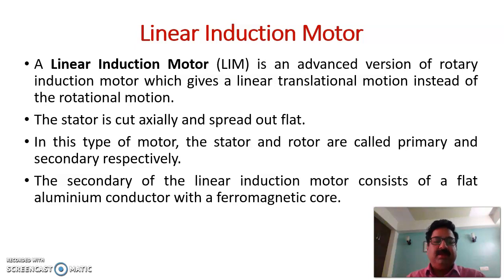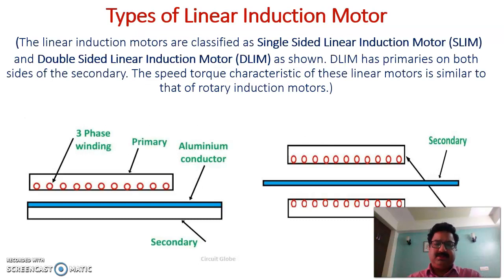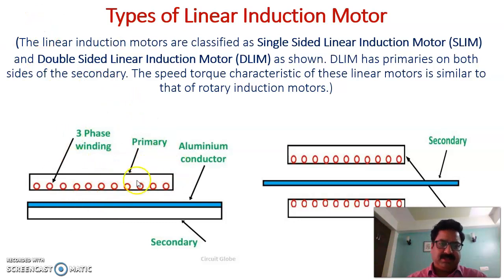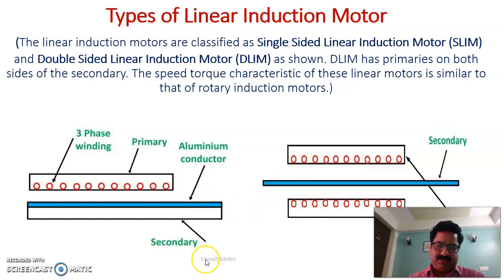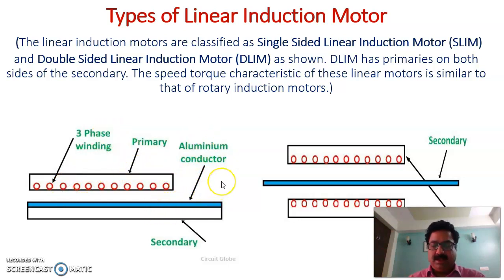Linear induction motors are classified as single-sided and double-sided linear induction motors. In the single-sided type, there is a three-phase winding on the primary and an aluminium conductor as the secondary. In the double-sided type, there are two primaries — one above and one below the secondary. This is the key structural difference between single-sided and double-sided linear induction motors.